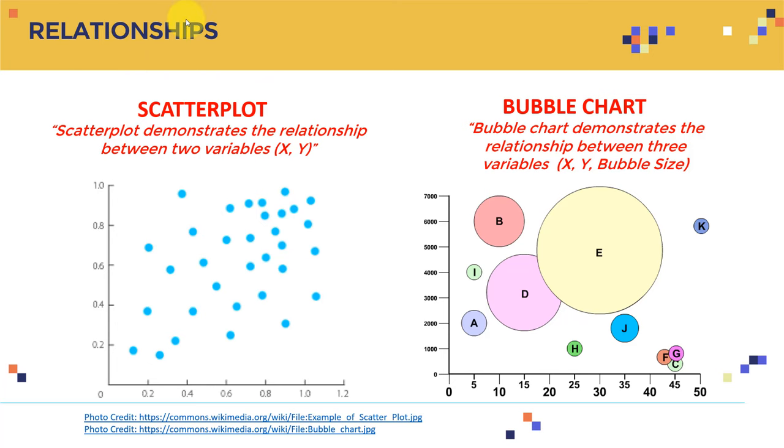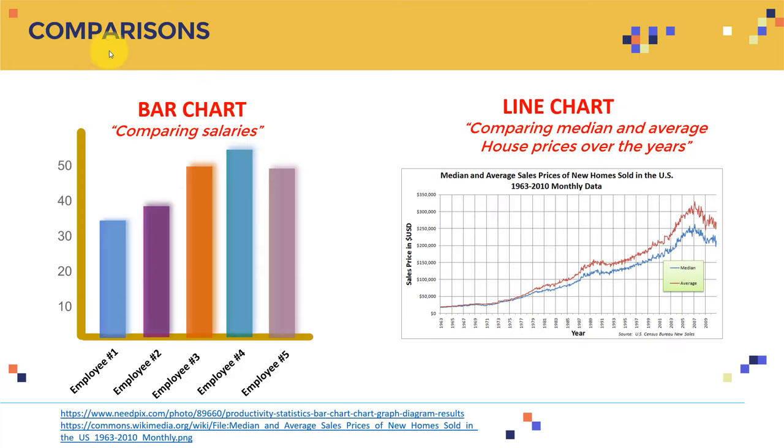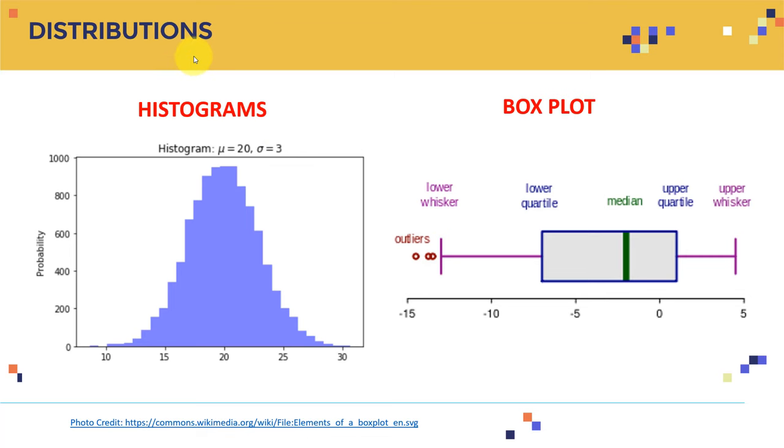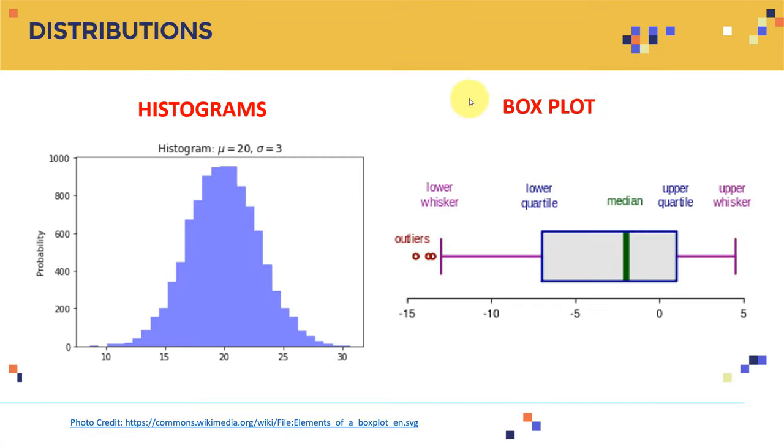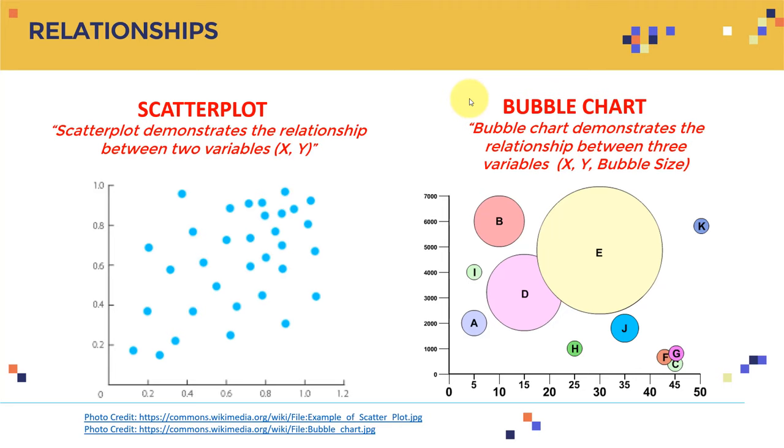In general, we are going to find there are four kind of very high-level categories when we start to do visualizations. First, we have relationships. Second, we have comparisons. Third, we have distributions. And fourth, we have compositions.